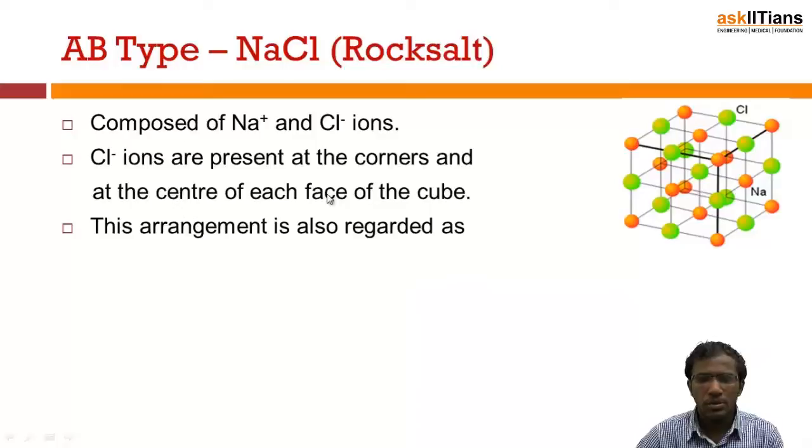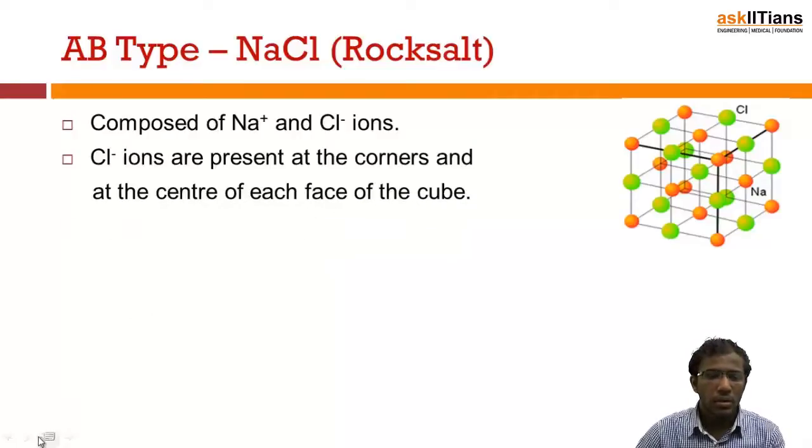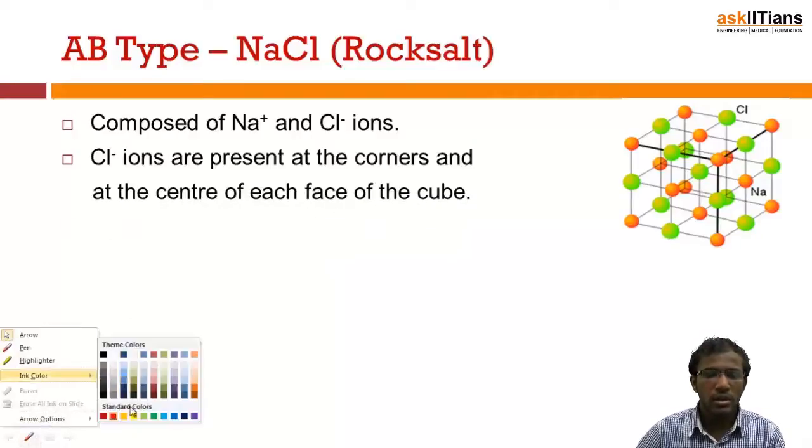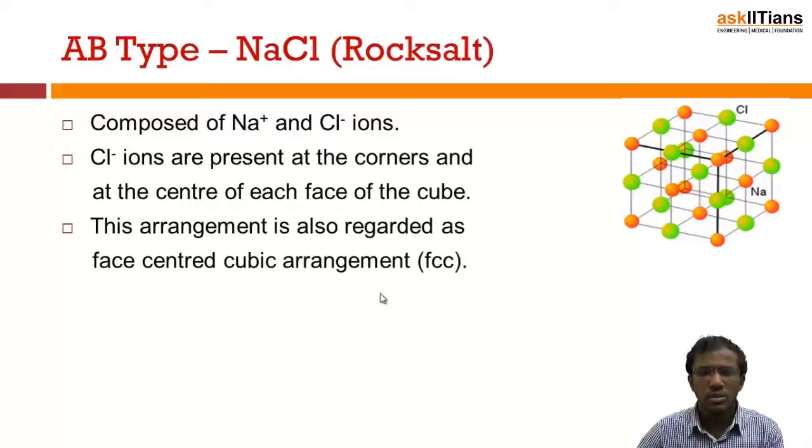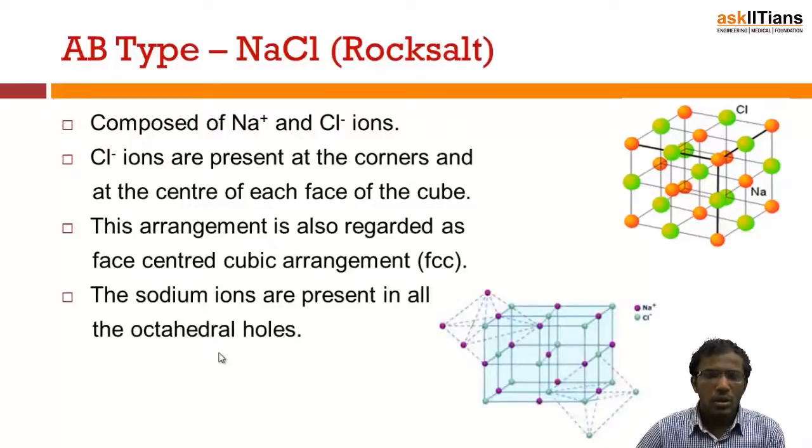Chloride ions are present at the corners and at the center of each face of the cube. This arrangement is also regarded as FCC type of arrangement, which is face centered cubic arrangement. We already discussed this. So the chloride ions are present at the face centers as well as the corners.